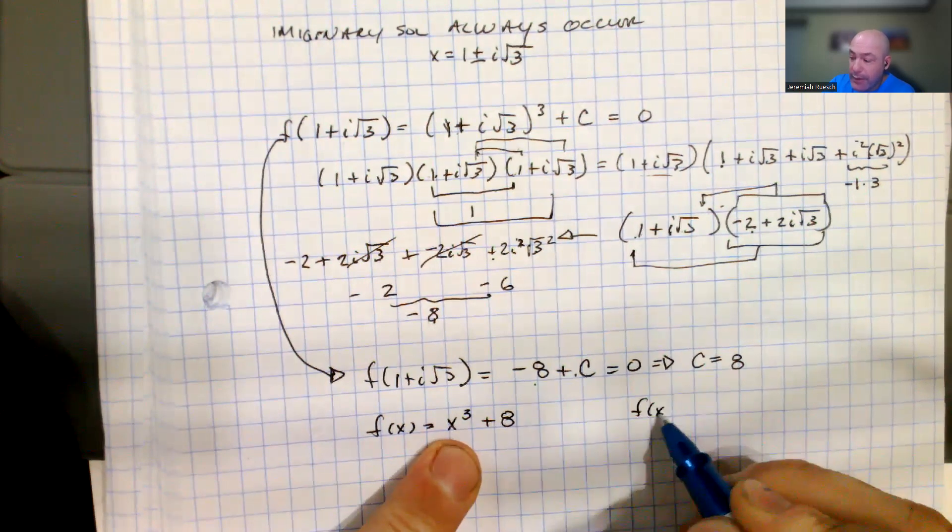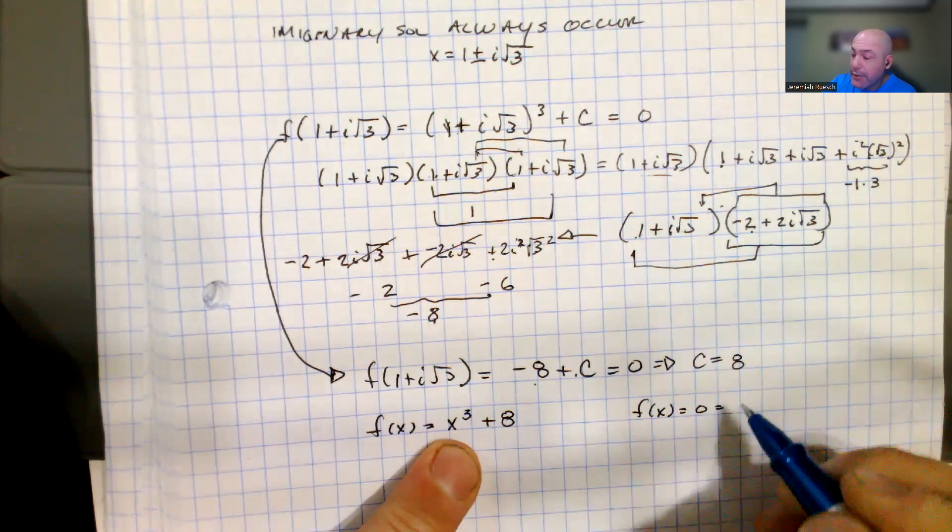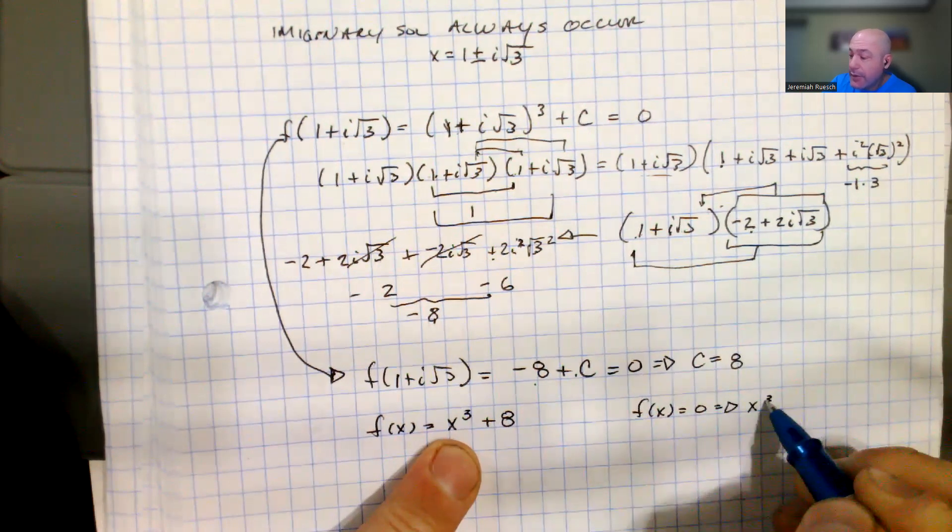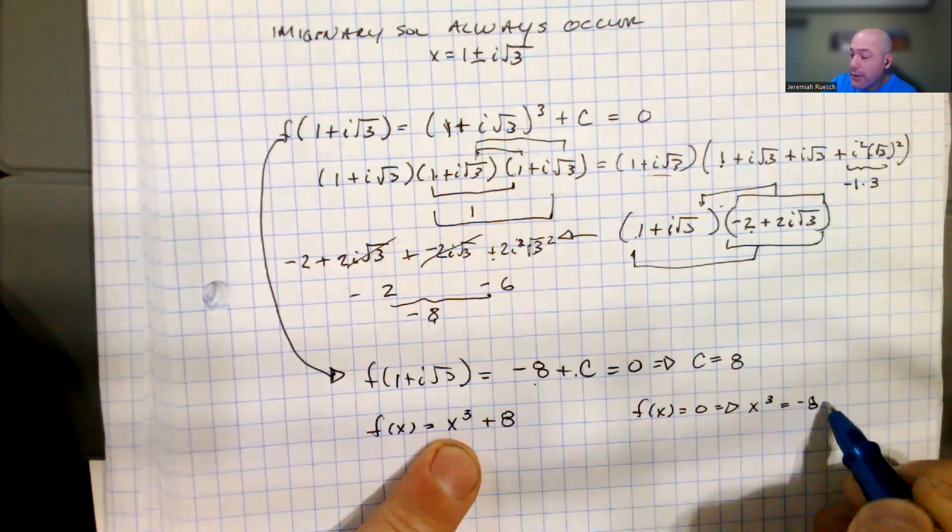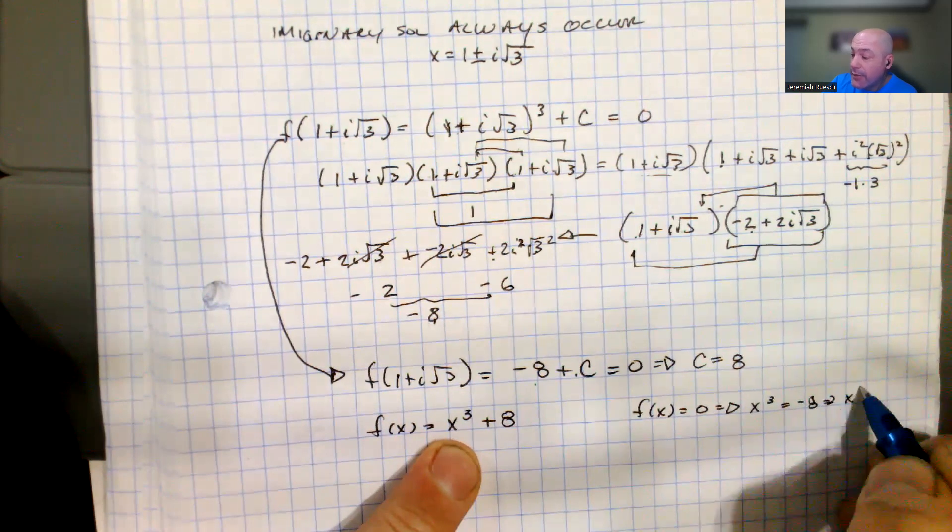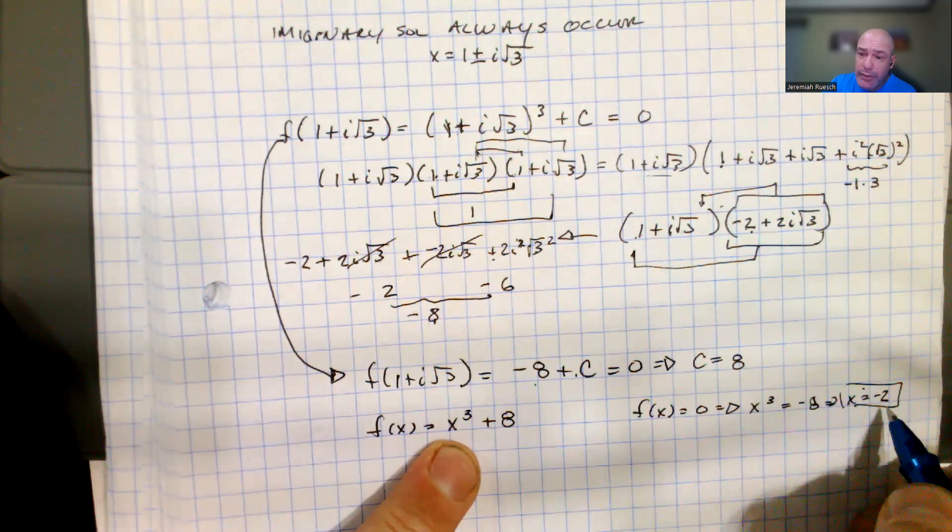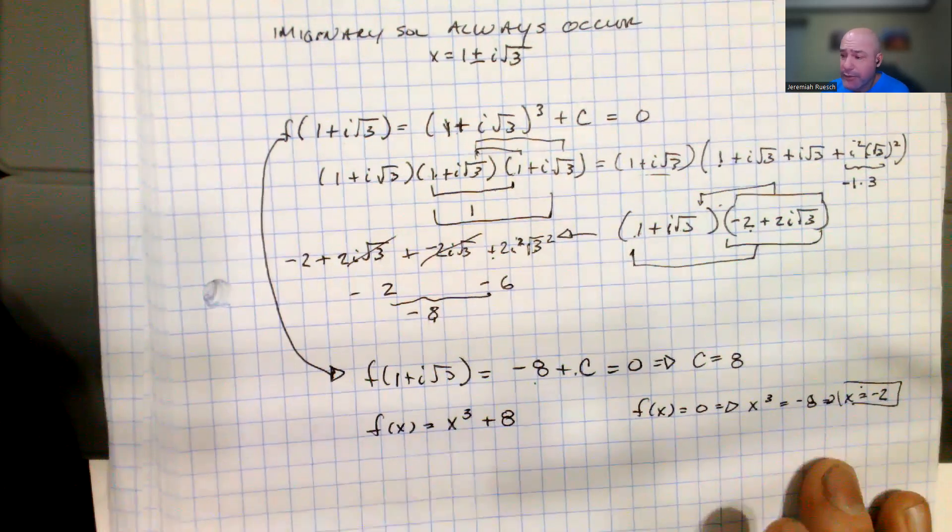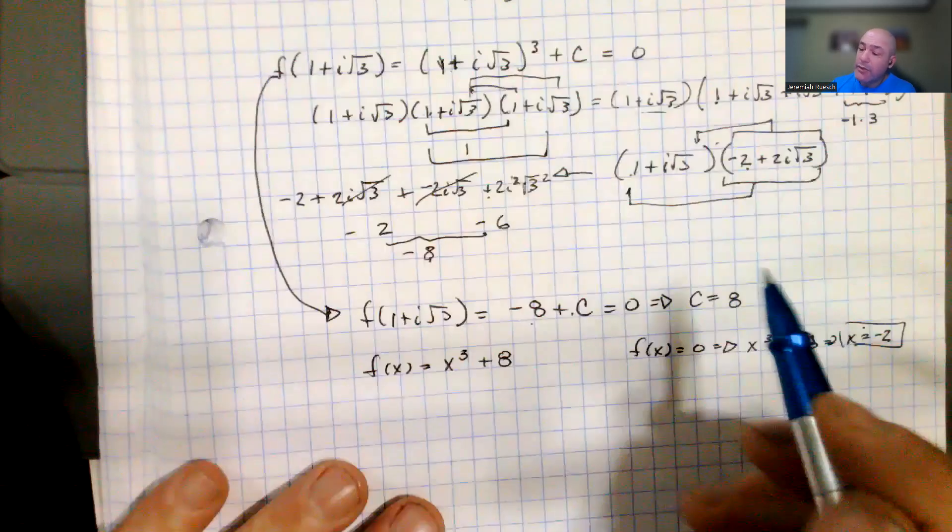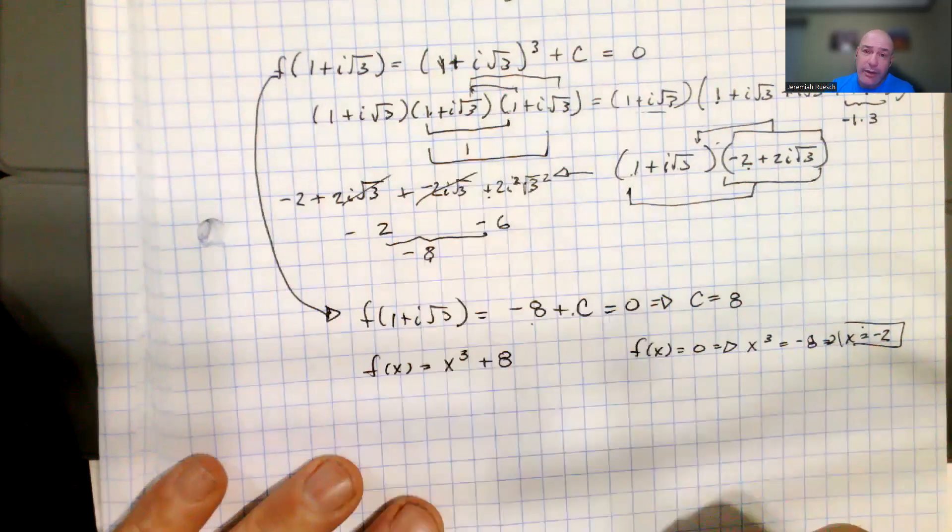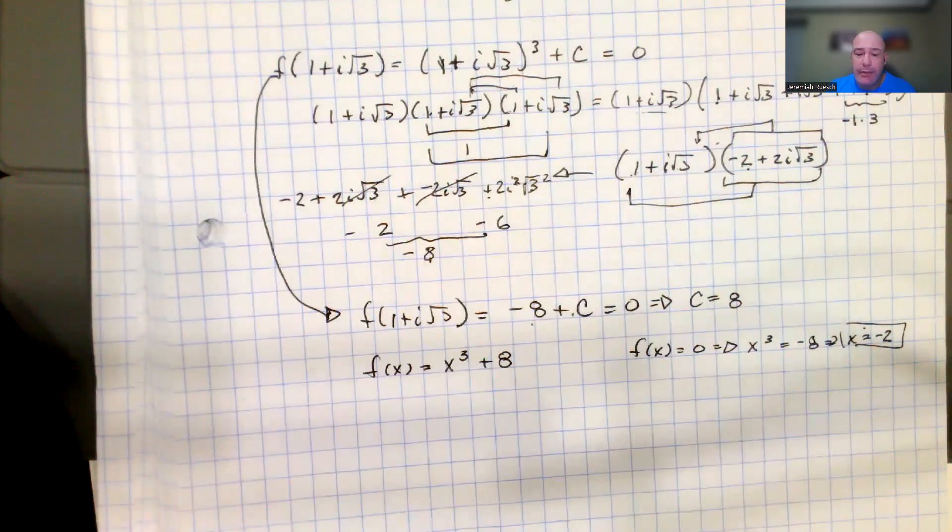If we wanted to find out what the real root actually was, this would be an easy calculation. We can just set f(x) equal to zero, and that would give us that x cubed equals negative 8, which implies that x is equal to negative 2, the real root. Not that we need to know that, but just in case you're curious. And then the two imaginary solutions. So now we have that part, let's go ahead and sketch the graph.